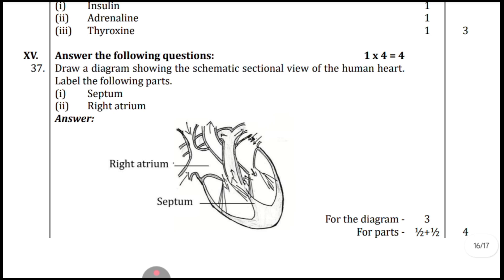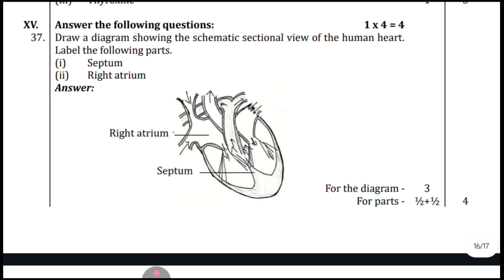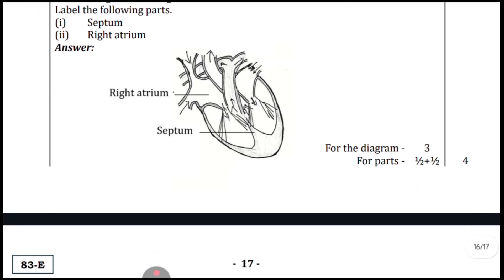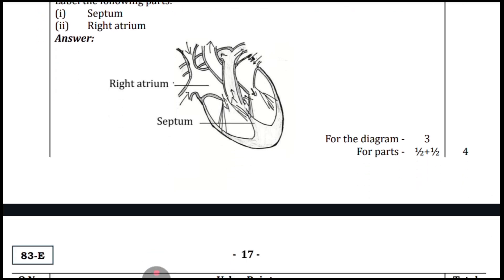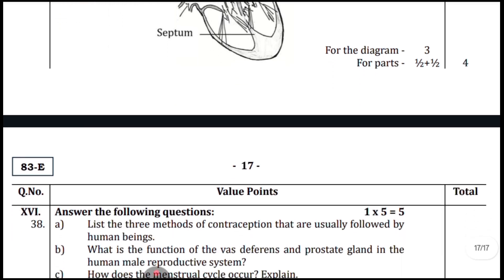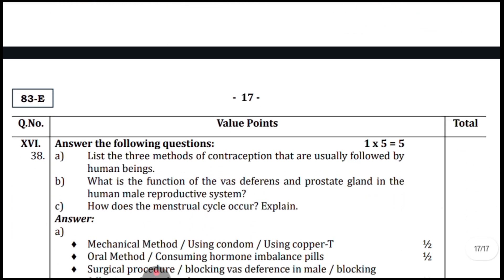Draw a diagram showing the schematic sectional view of the human heart and label the septum and right atrium. For the diagram: three marks are given directly. For labeling the parts: half a mark each. Draw the diagram neatly — without the diagram you cannot label the parts.